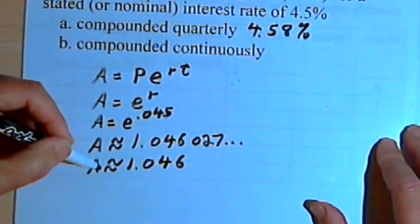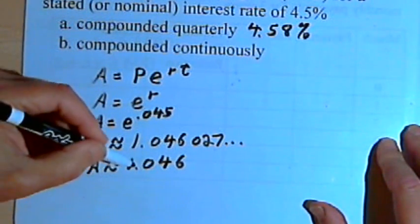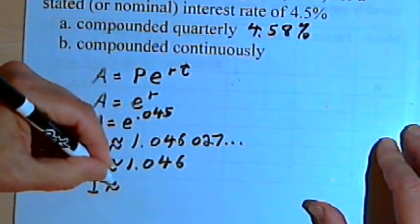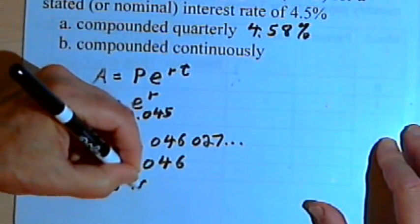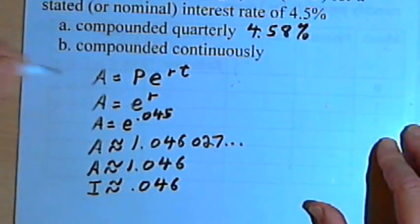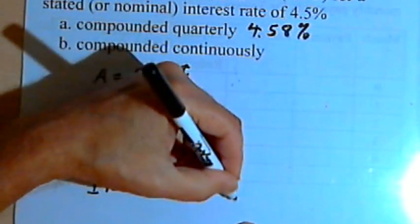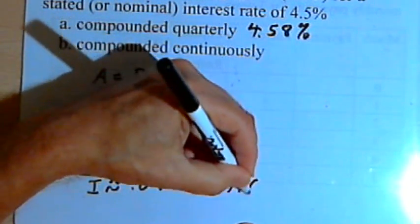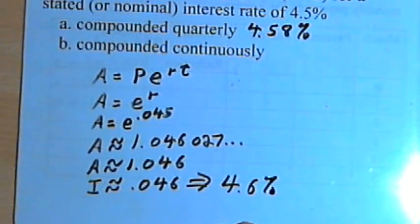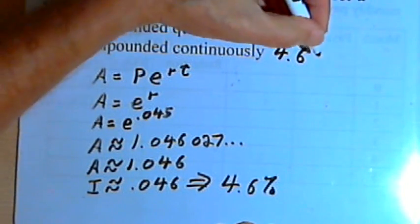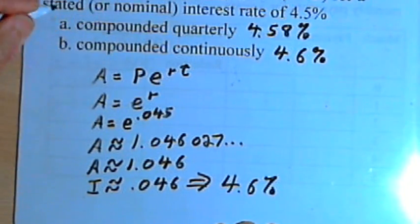Then we just want to subtract the original dollar that we invested from this 1.046, so we'll get the interest, which is 0.046. We turn that into a percentage by multiplying it by 100 and adding a percentage sign, so it's 4.6 percent. And that's the APY for the compounded continuously part of the problem.